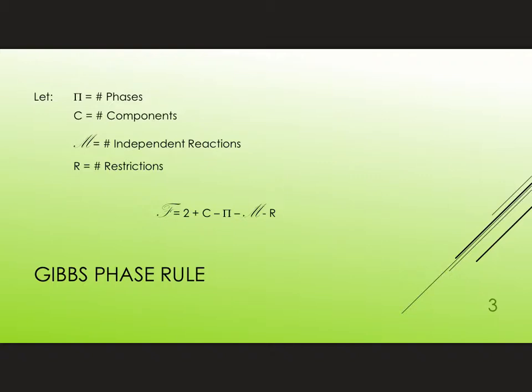The reason we need this is for Gibbs phase rule. So if we let pi represent the number of phases, c the number of components, m the number of independent reactions, and r the number of restrictions or independent rules that we need to keep true, say maybe you have a feed rate that's always 2 to 1 or something like that.